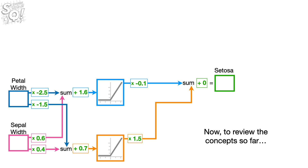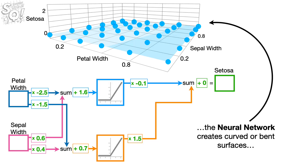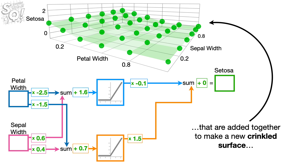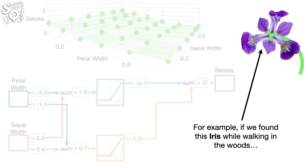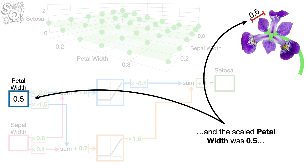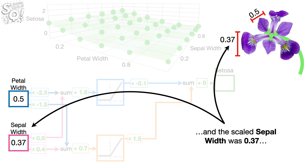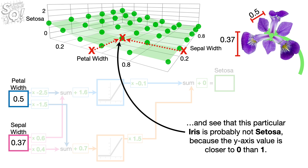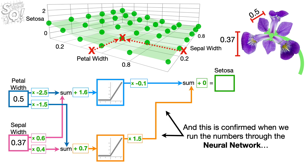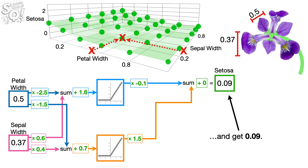To review the concept so far: when we have two inputs, the neural network creates curved or bent surfaces that are added together to make a new crinkled surface that we can use to make predictions about whether or not the species of an iris is Setosa. For example, if we found an iris while walking in the woods, and the scaled petal width was 0.5 and the scaled sepal width was 0.37, then we can look at the y-axis value on the green crinkled surface — and see that this particular iris is probably not Setosa because the y-axis value is closer to 0 than 1. This is confirmed when we run the numbers through the neural network and get 0.09.